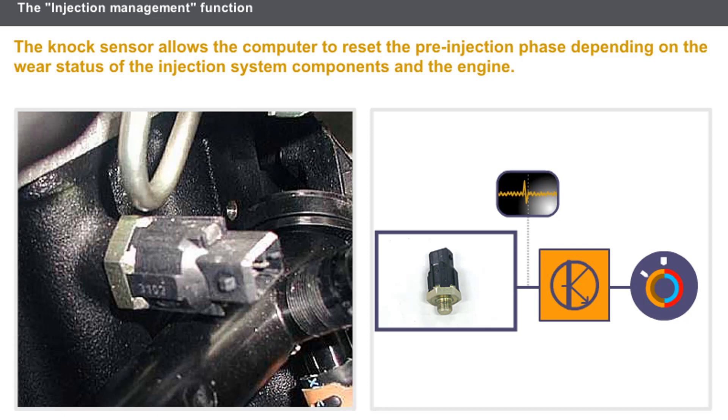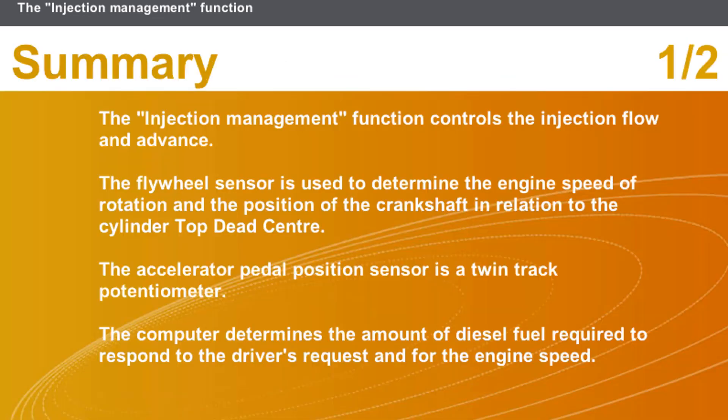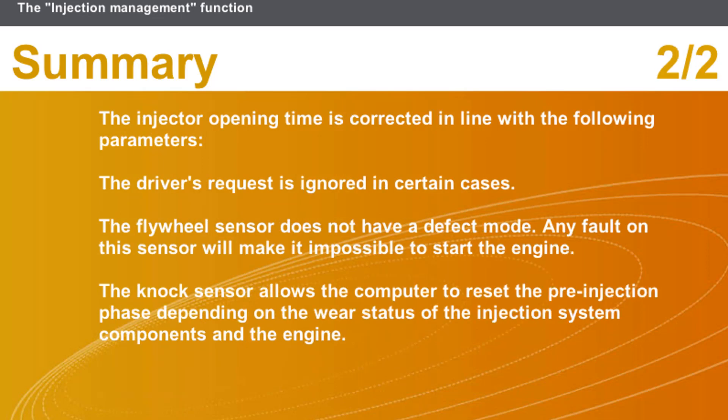The knock sensor maintains the system performance level over time. In summary: the injection management function controls injection flow and advance; the flywheel sensor determines engine speed and crankshaft position relative to cylinder top dead center; the accelerator pedal position sensor is a twin track potentiometer; the computer determines the diesel fuel quantity required; injector opening duration is corrected for various parameters; the driver's request is ignored in certain cases; and the knock sensor allows the computer to reset the pre-injection phase based on component wear.